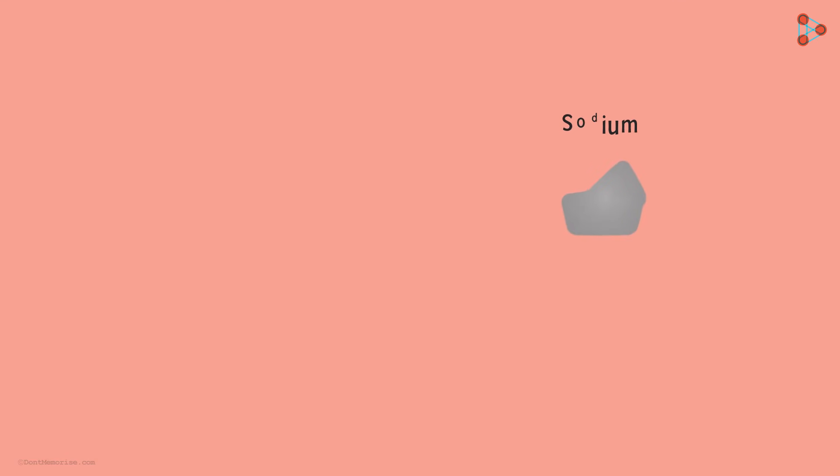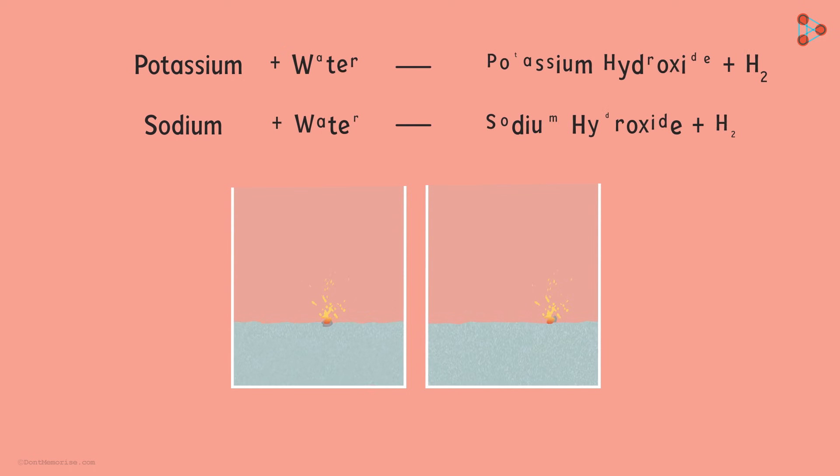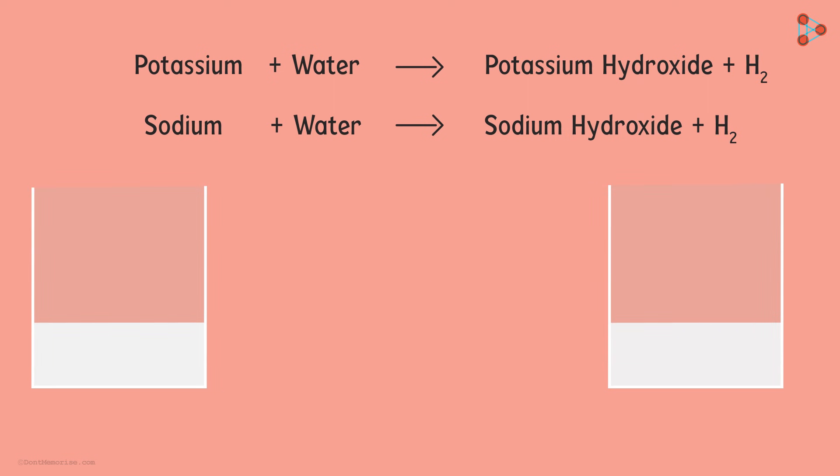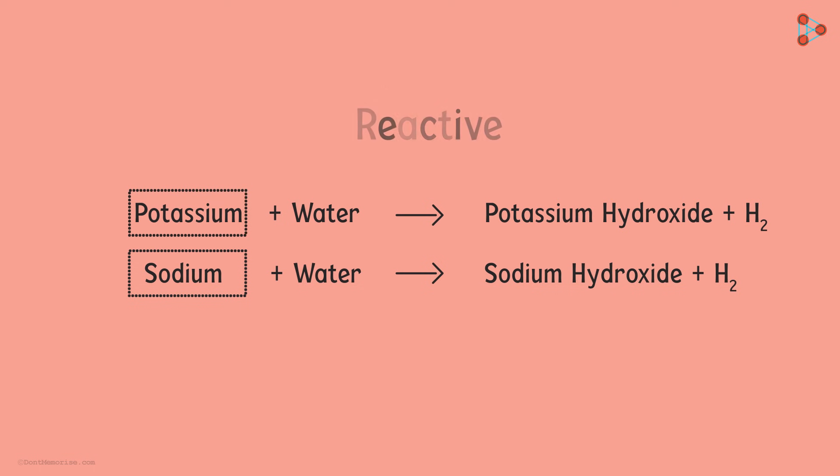Metals like sodium or potassium react violently with cold water. In cases of these two metals, the reaction is so violent that the evolved hydrogen immediately catches fire. The equations look like this. This hydrogen catches fire immediately after the reaction. That's how vigorous the reaction is. So we know that sodium and potassium are very reactive.